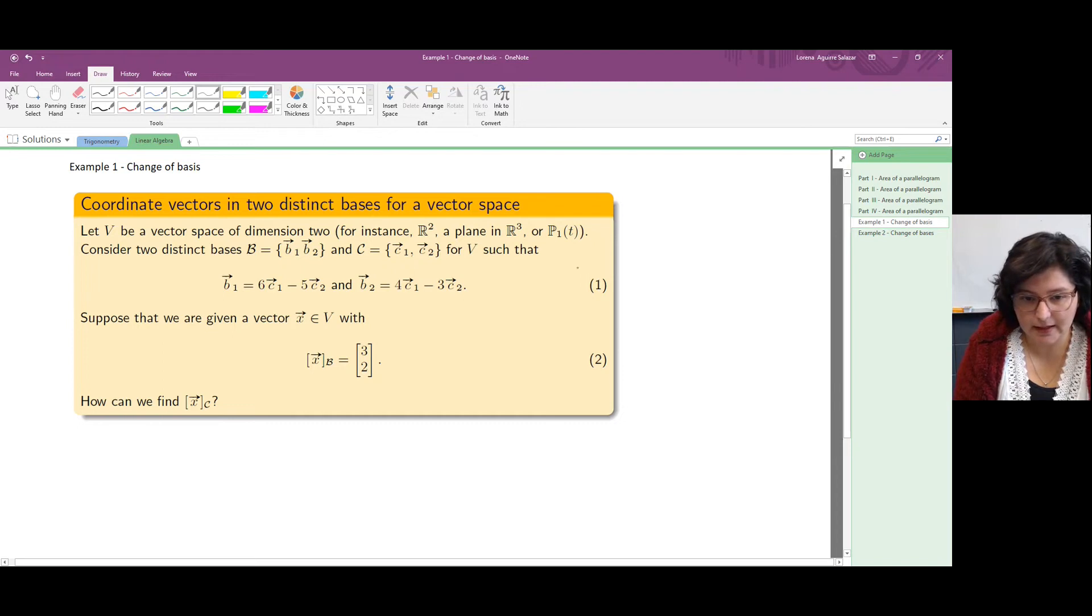Notice that the fact that we have coordinates 3, 2 with respect to basis B tells us that our vector X can be seen as 3B1 plus 2B2. And the coordinates with respect to the new basis C will be such that X can be written as a linear combination of C1 and C2 with weights X1 and X2 correspondingly.